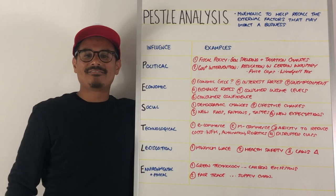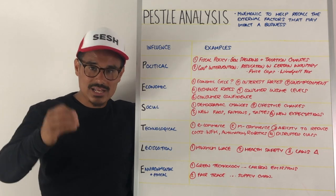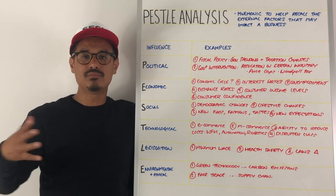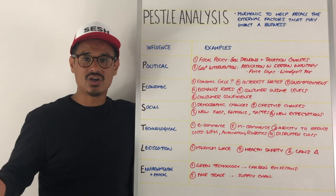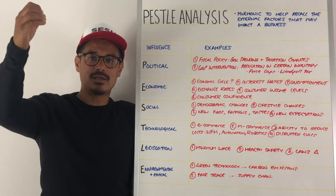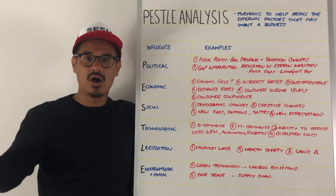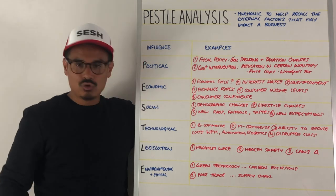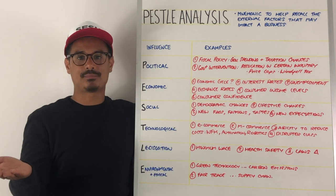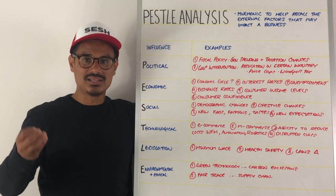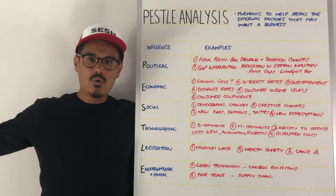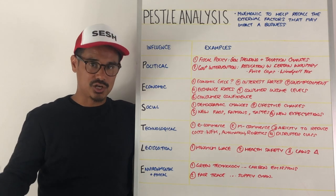Number two is government intervention — that is when governments look to intervene in certain markets. They're very likely to do this in monopolies, because monopolies may not be good for society in that they are anti-competitive and likely to increase prices, leaving consumers no choice. Types of regulation include price caps — we've seen this in the energy market — and windfall taxes, which are a one-off tax placed on a certain industry such as banking.